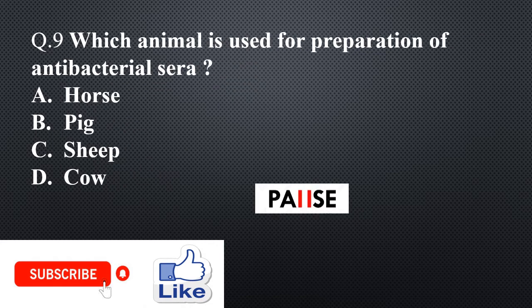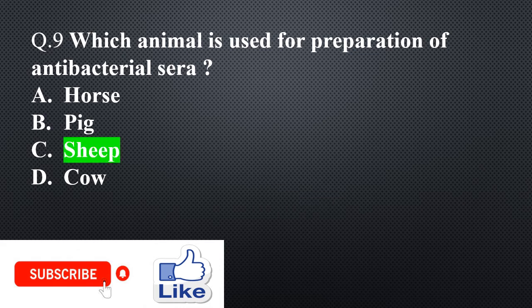Question 9. Which animal is used for the preparation of antibacterial sera? Option A: Horse, Option B: Beak, Option C: Sheep, Option D: Cow. The right answer is Option C: Sheep.